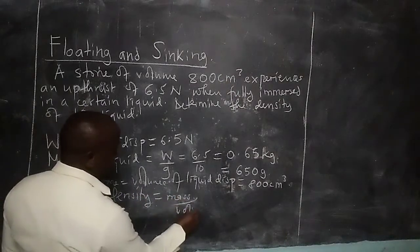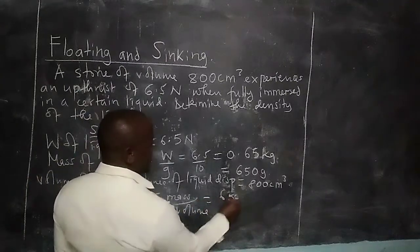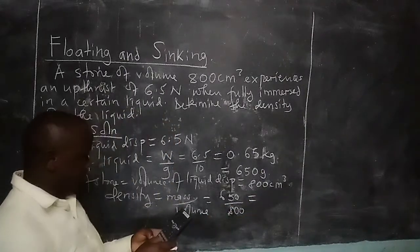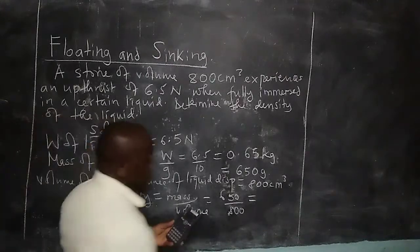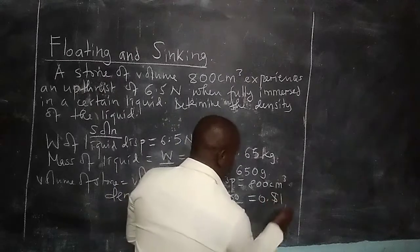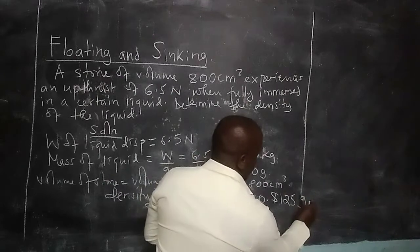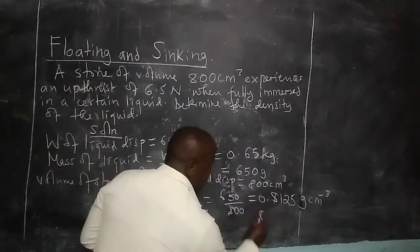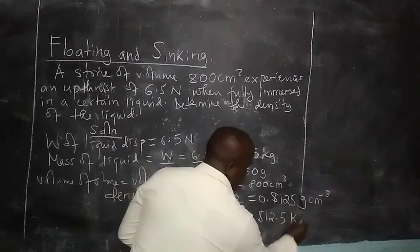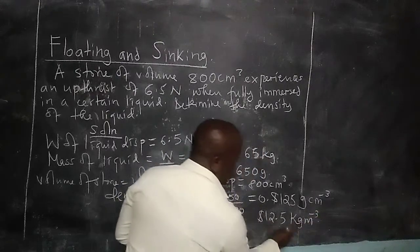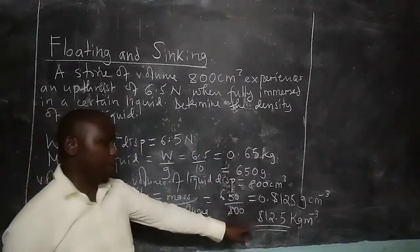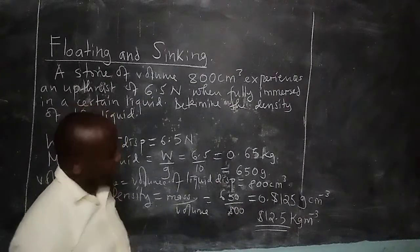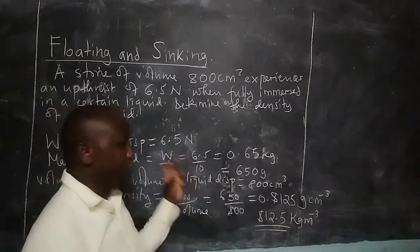Therefore, with mass and volume we can get density. Density equals mass divided by volume. For the liquid displaced, we have mass of 650 and volume of 800, which gives us 650 divided by 800, equals 0.8125 grams per cubic centimeter, which can also be expressed as 812.5 kilograms per meter cubed. Therefore, that is how we navigate through a question involving floating and sinking.